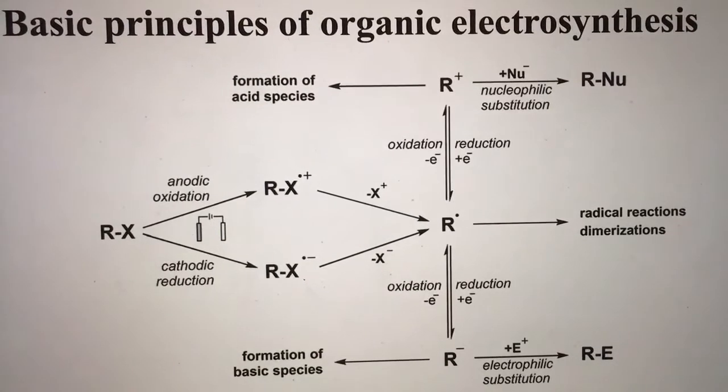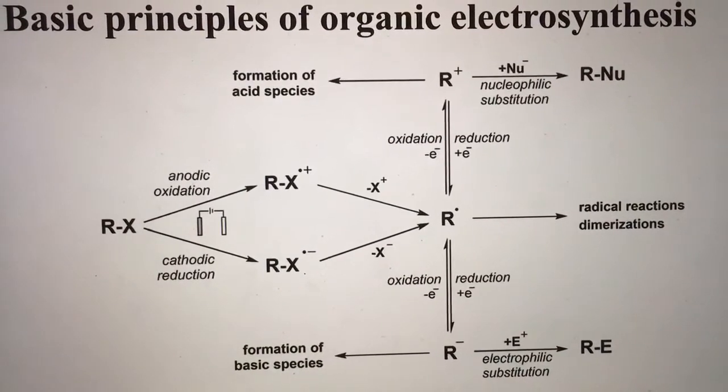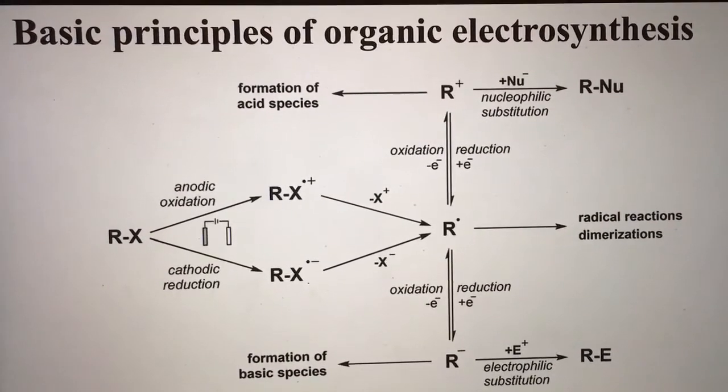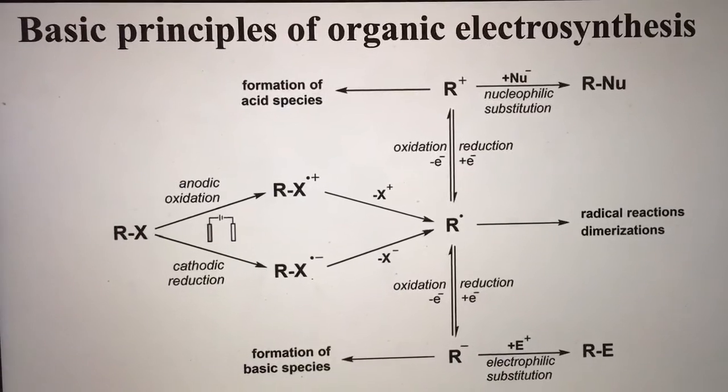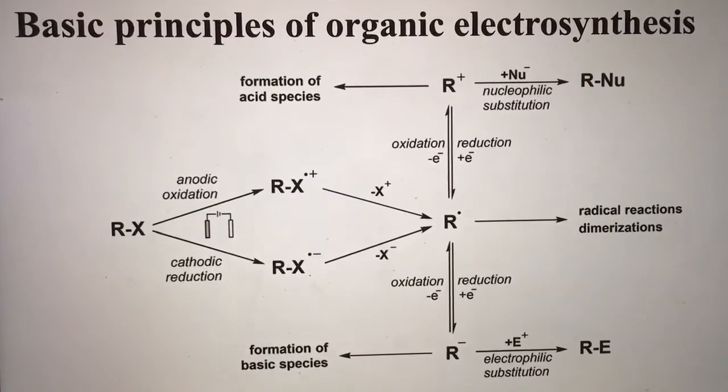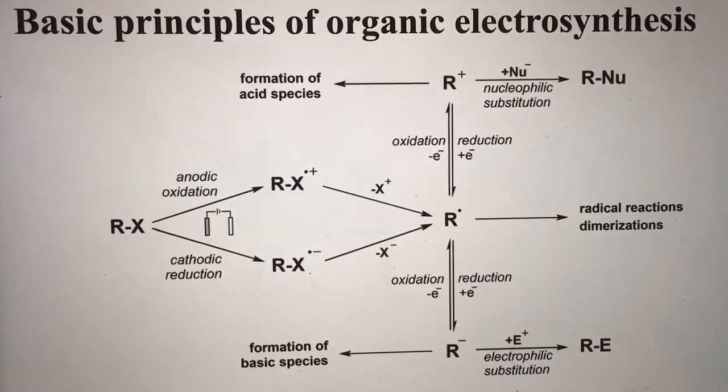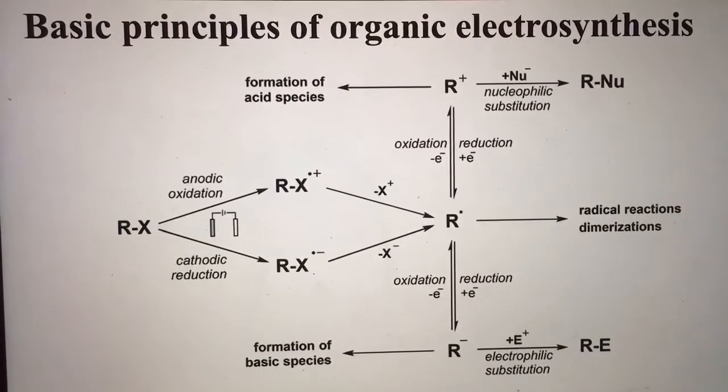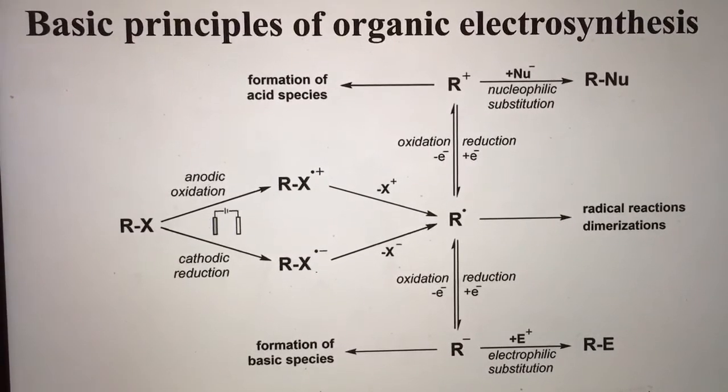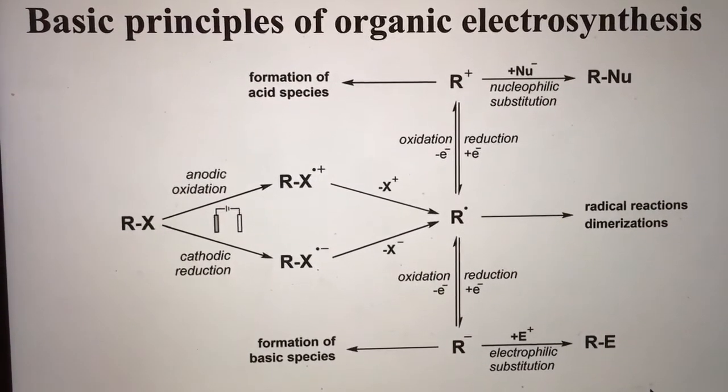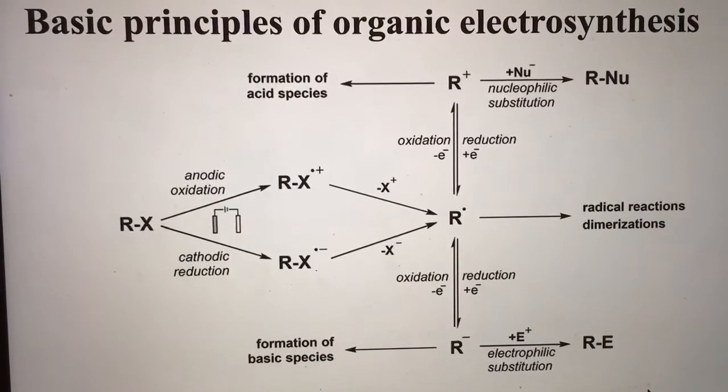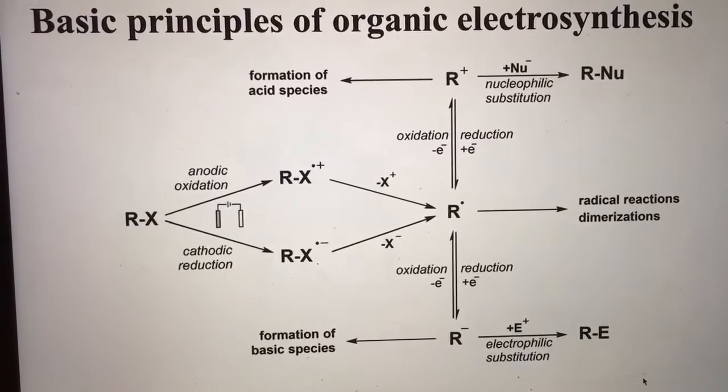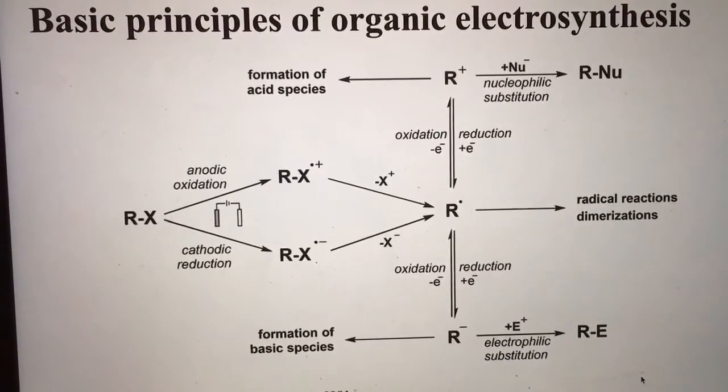The principles of organic electrosynthesis: in electrochemical organic reactions, substrates may undergo anodic oxidation with removal of electrons from the electrodes, or the substrate may be subjected to cathodic reduction with transfer of electrons from the electrodes to the substrate. In solution, due to instability, radical intermediates can undergo radical reactions.